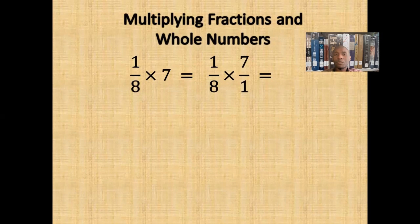For a review of multiplying fractions, feel free to check the link in the description. To multiply these fractions together, we will multiply the numerators together and the denominators together. If we multiply the numerators together, it will give us 7. And if we multiply the denominators together, it will give us 8. Thus, we get 7/8.